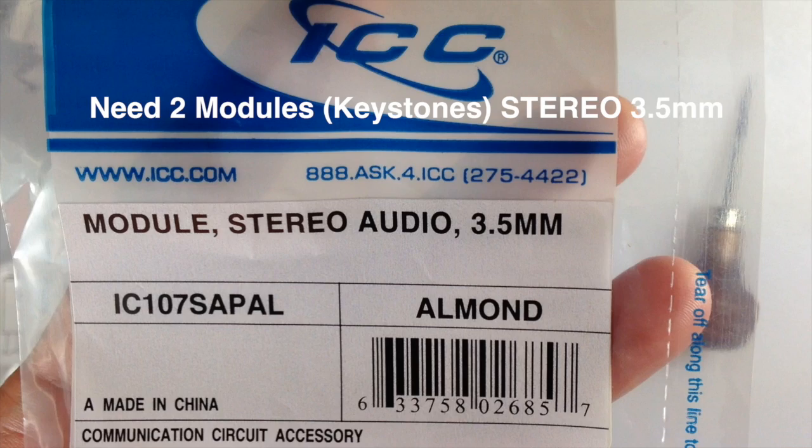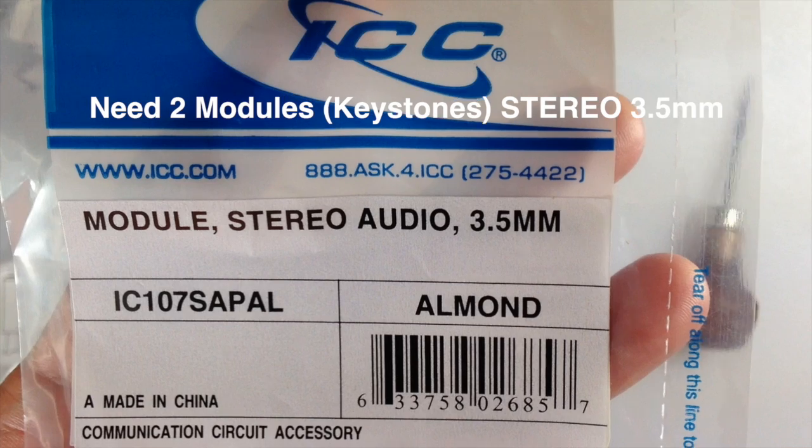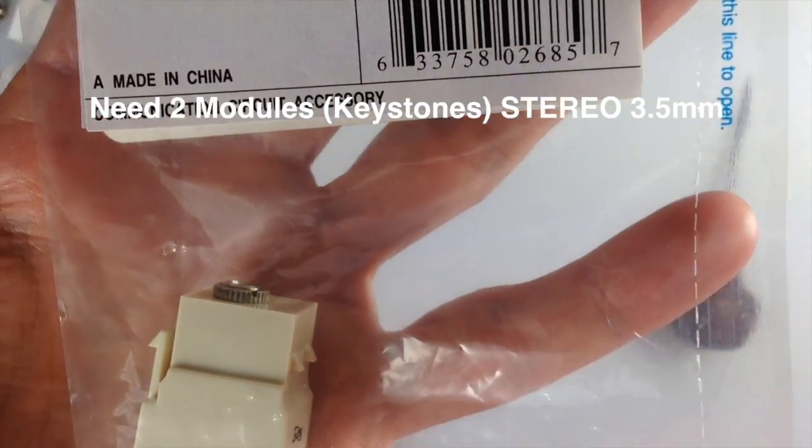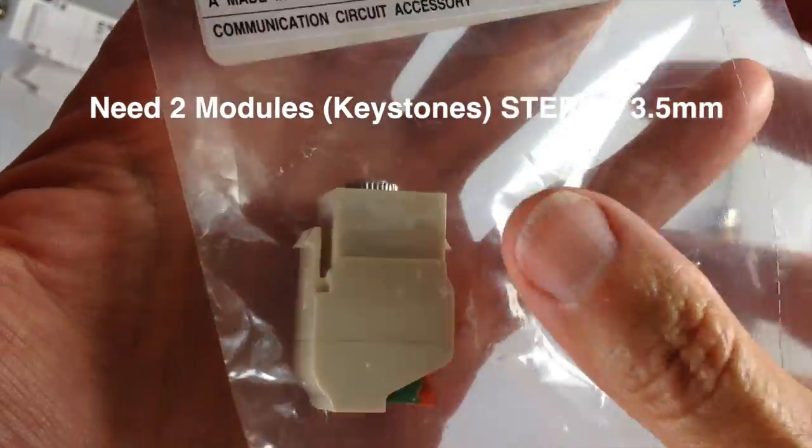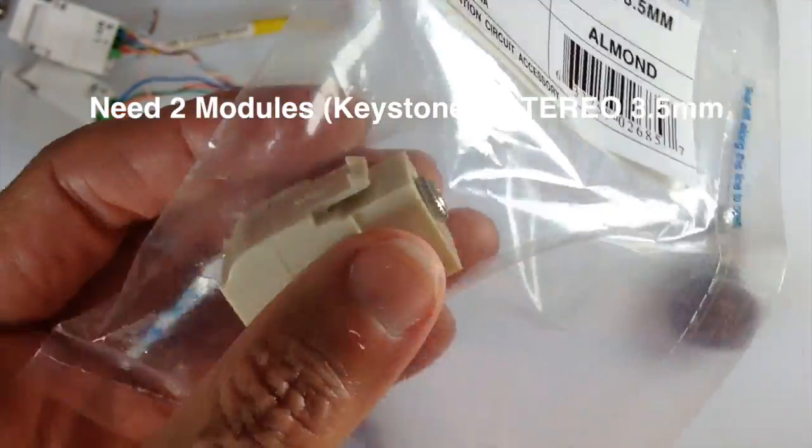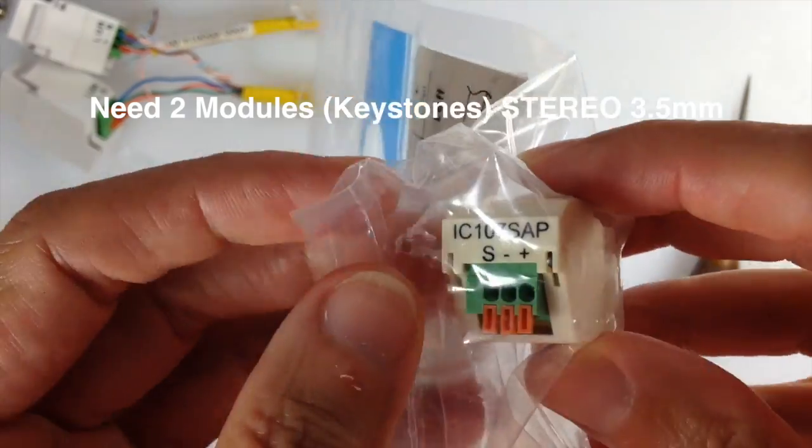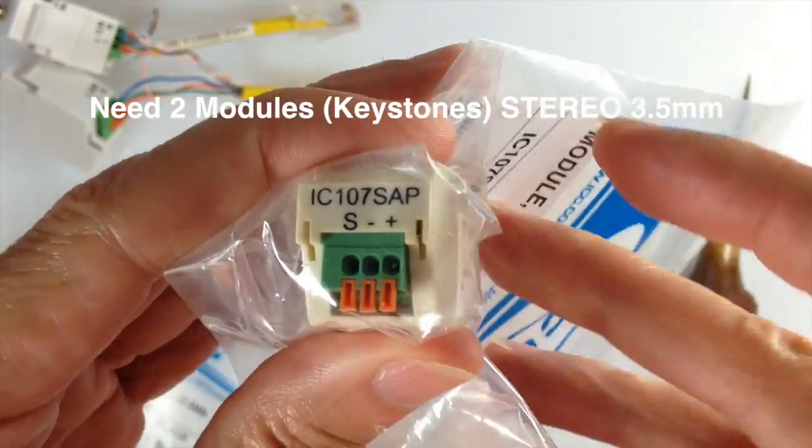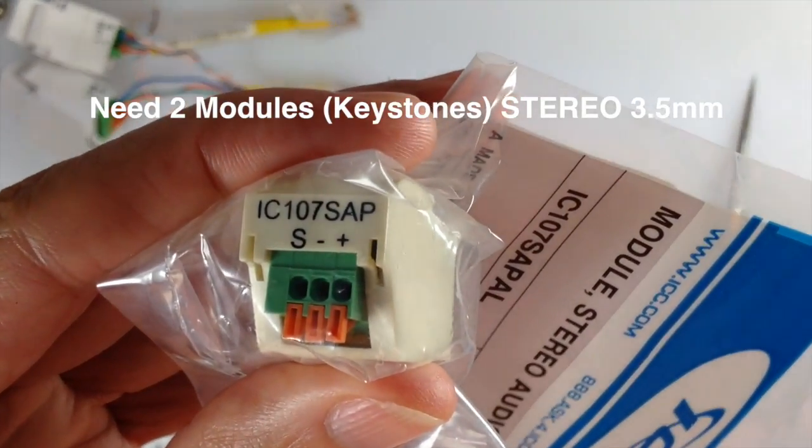For this project, you will need two modules, which are also known as keystones, that are stereo audio 3.5 millimeter. 3.5 millimeter is the same thing as an eighth inch. You will need two of these modules and one patch cord.